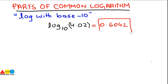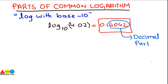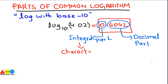By looking at this answer, we can say there are two parts of the common logarithm. The part after the decimal is called the decimal part, and the part before the decimal is called the integral part. We call the integral part the characteristic, and the part after the decimal point is called the mantissa.